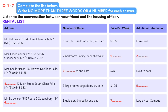You will hear a number of different recordings and you will have to answer questions on what you hear. There will be time for you to read the instructions and questions, and you will have a chance to check your work. All the recordings will be played once only. The test is in four sections. Write all of your answers in the listening question booklet. At the end of the real test, you will be given ten minutes to transfer your answers to an answer sheet.